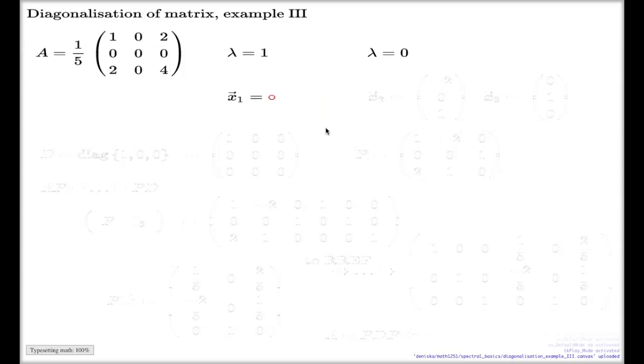And the associated eigenvectors were like this. For eigenvalue 1, it will be this B vector which gave rise to the projection map: (1, 0, 2). For the zero eigenvalue we found two eigenvectors. One of them was like this and the other one was like this.